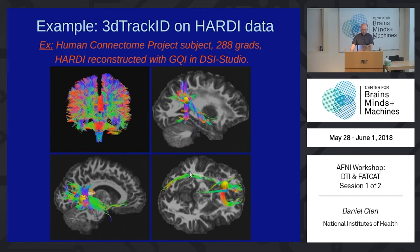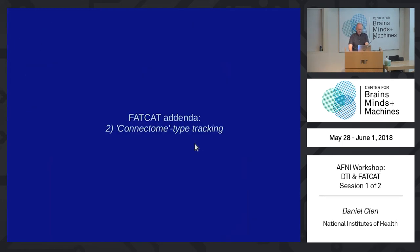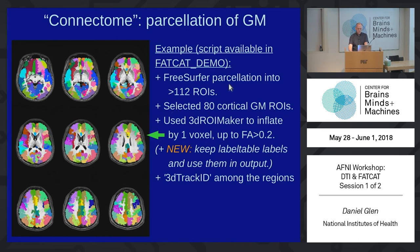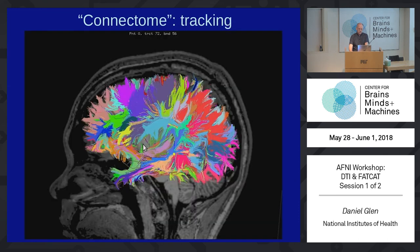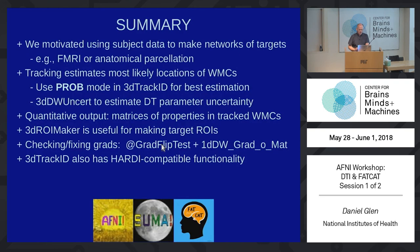This is what it looks like — it's pretty nice and probably better, but it does take up a lot more time. Fat Cat can also do the connectome type of tracking. This is where you give it a parcellation — here we use parcellation from FreeSurfer, and we use ROI Maker to inflate the regions up to that FA of 0.2. We keep the label tables in it, then do the tractography. You call 3D Track ID with these as your seed regions, and voilà — you get connectome tracking. All the fibers are colored by the regions. That ends this part of the presentation.